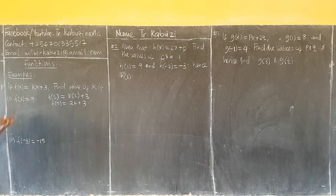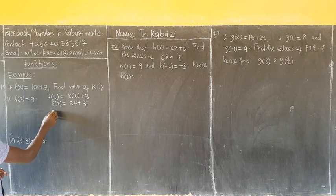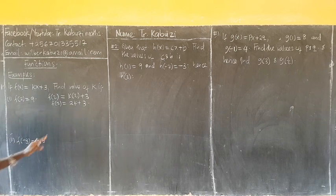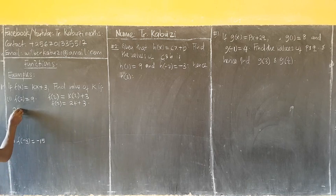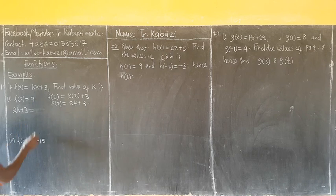Now we are doing that my f of 2 is 9. So from here, my f of 2 is 9. First of all, my f of 2 is now 2k plus 3 equal to 9.